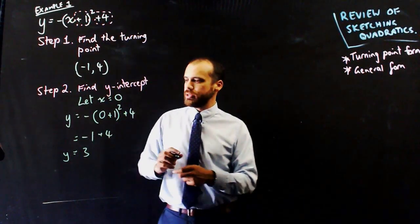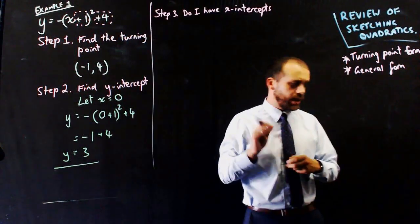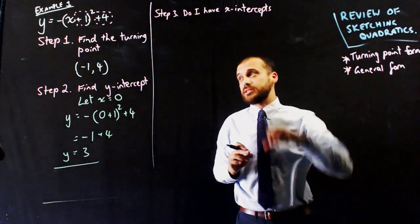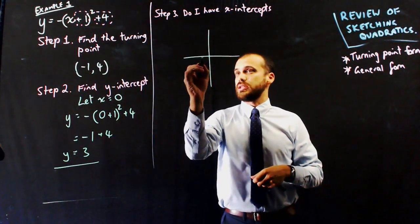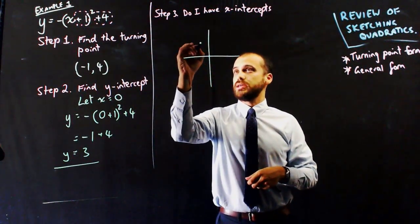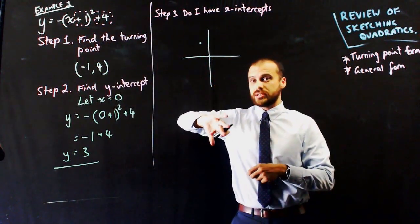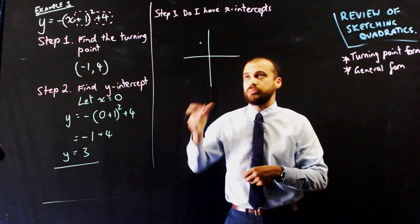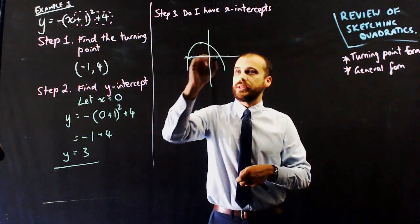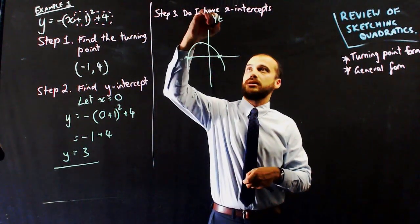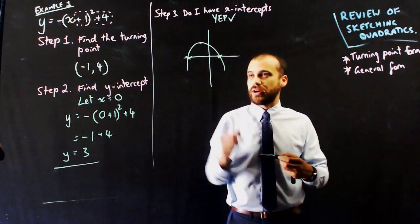Step 3: ask yourself the question, do I have x-intercepts? The turning point is negative 1, 4, so it's up here somewhere. The negative out the front tells us this is going to be a sad-faced parabola. If the turning point is above the x-axis and it's a sad-faced parabola, then yes, it's going to have x-intercepts. You can work that out with a rough sketch.